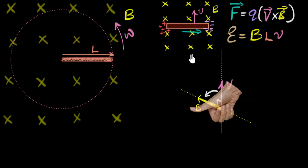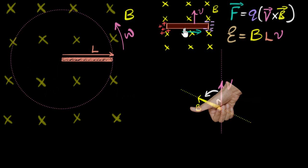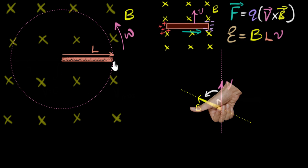The same concept applies over here — the rod is moving in a magnetic field, charge separation will take place, and as a result there will be a potential difference generated. The problem is that instead of moving linearly, this rod is rotating. The complication is that when things are rotating, different parts are moving with different speeds.